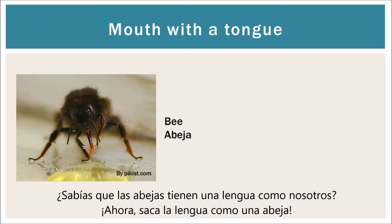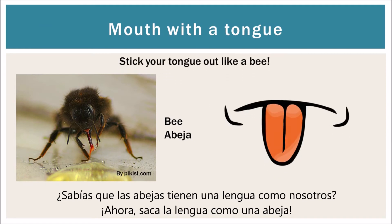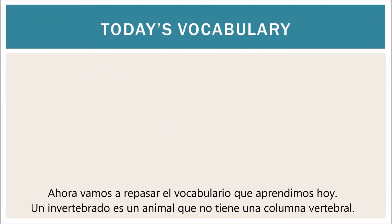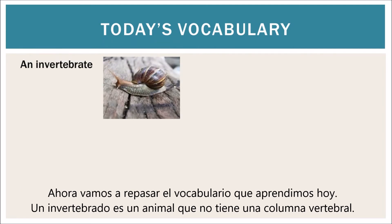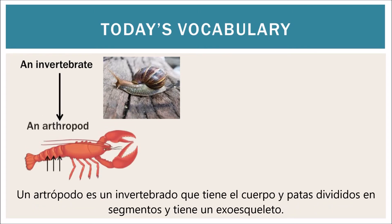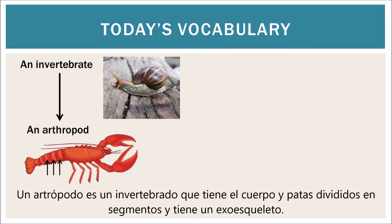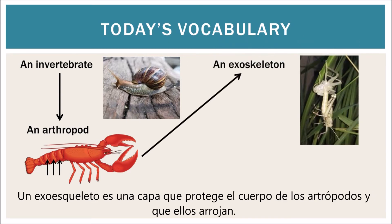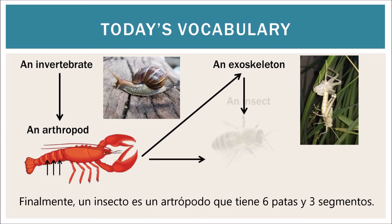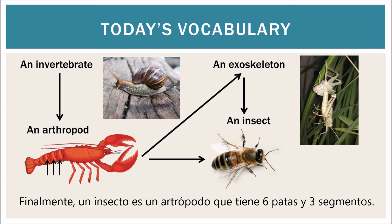Did you know that bees have tongues just like us? Now stick out your tongue just like a bee. Now we're going to review the vocabulary that we learned today. An invertebrate is an animal that does not have a backbone or a spinal cord. An arthropod is an invertebrate that has a segmented body and an exoskeleton. An exoskeleton is a protective layer for an arthropod that it sheds. Finally, an insect is an arthropod that has six legs and three body segments.